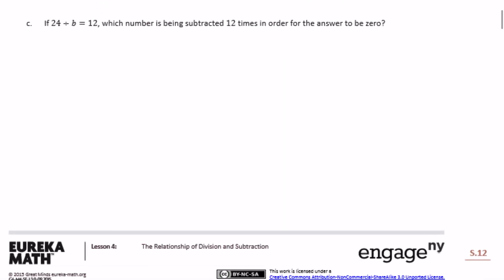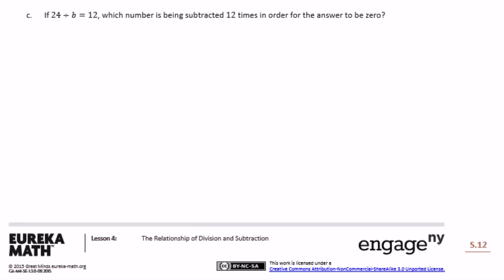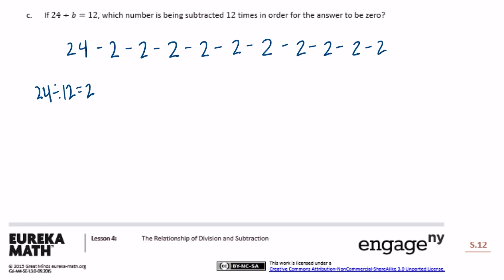Part c: If 24 divided by b equals 12, which number is being subtracted 12 times in order for the answer to be 0? We need 24 minus something, subtracted 12 different times, to equal 0. If I do 24 divided by 12, I get 2. So I need to subtract 2 twelve different times, and that equals 0. The answer is 2.